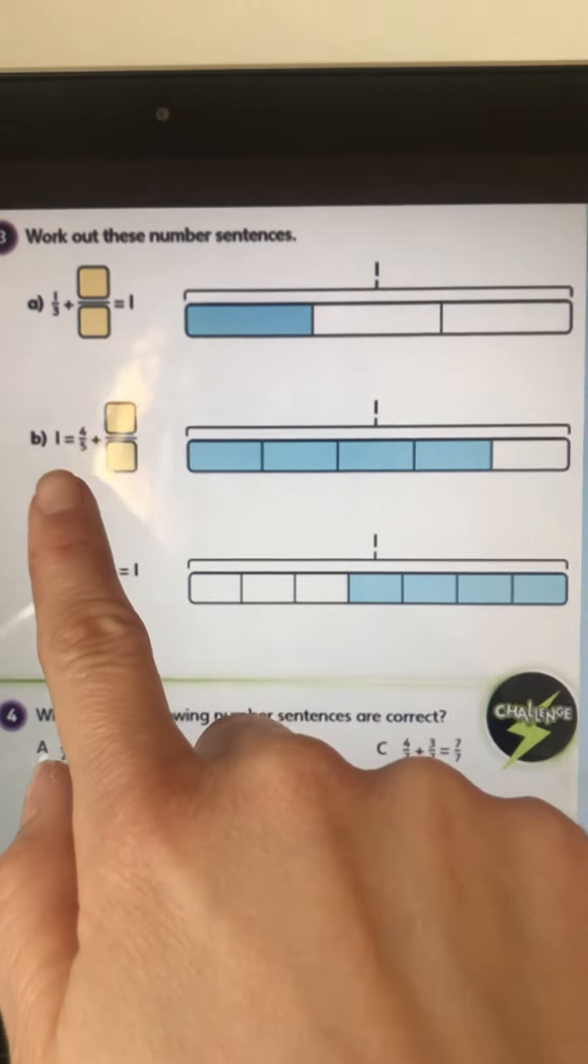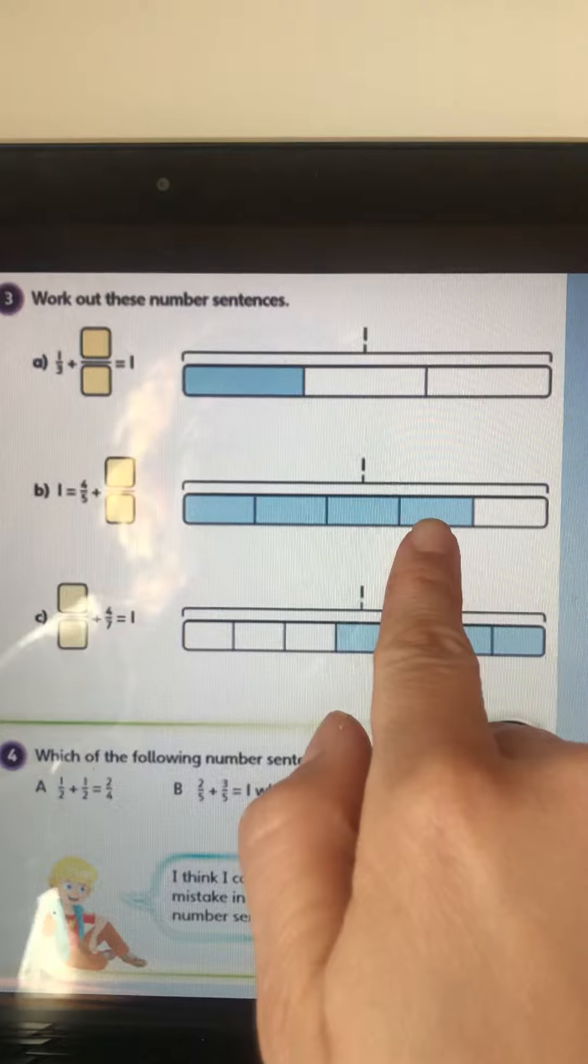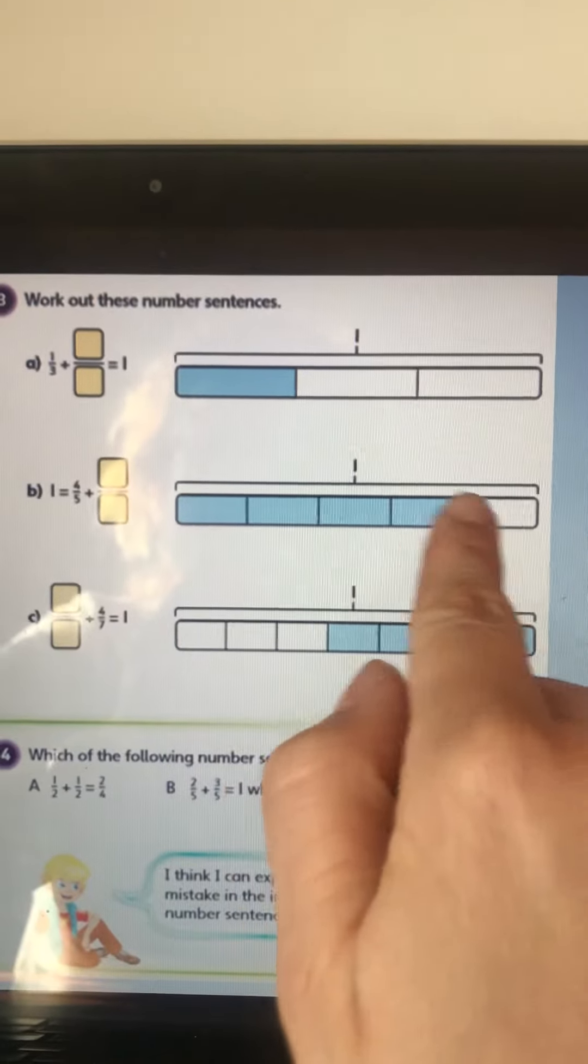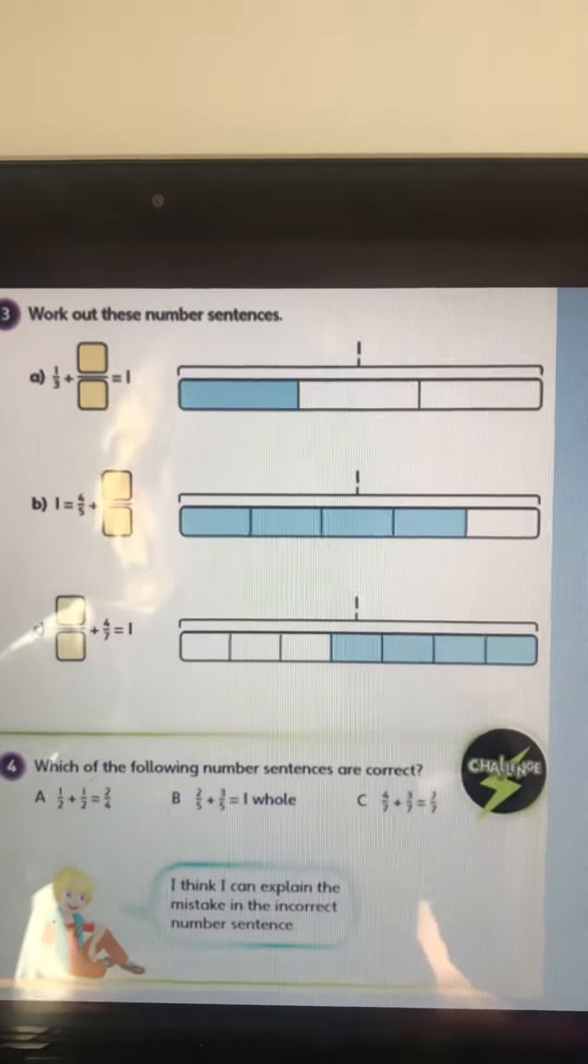And the same goes here, one equals, and is that the same, four fifths, they're colored in the four fifths for you. So what is left to make it a whole, and then here four sevenths, what is left to make it a whole.